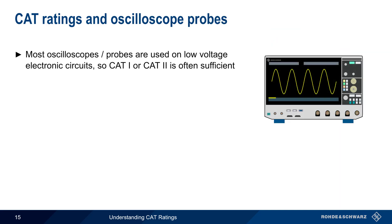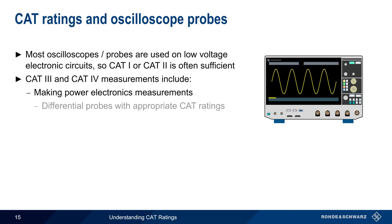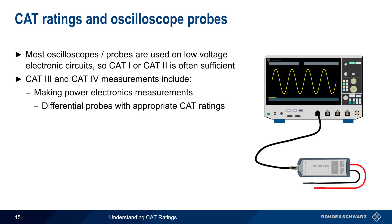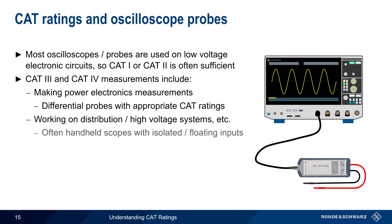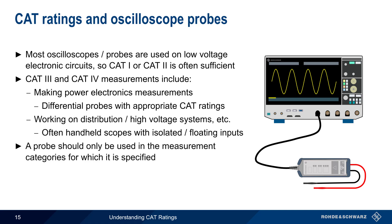Most oscilloscopes are used in lab or R&D environments on relatively low voltage electronic circuits, so a CAT 1 or CAT 2 rating is usually sufficient for most oscilloscopes and probes. Examples of CAT 3 and CAT 4 measurements include power electronic measurements, which normally use differential probes with appropriately higher CAT ratings. Another example is measurements made on distribution or higher voltage systems, typically done using handheld oscilloscopes with isolated or floating inputs for additional safety. Regardless of the application, a probe should only be used in the measurement category for which it's specified.